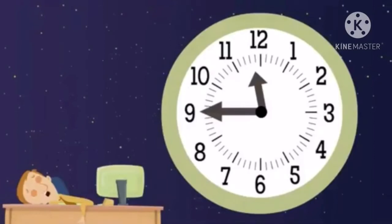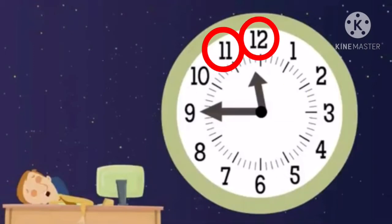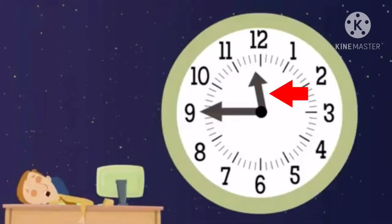Let's look at this clock. What time is it showing, children? First, let's look at the hour hand. The hour hand is between numbers again. It is between which numbers, children? Yes, it is number eleven and twelve. Remember, children, when the hour hand is between two numbers, the hour is the earlier number. So the hour here is eleven.